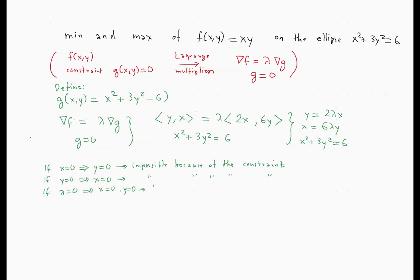So the bottom line is: x ≠ 0, y ≠ 0, and lambda ≠ 0. This is helpful because we can divide the first two equations by parts. When we do so, we get y/x = x/(3y), and cross-multiplying gives 3y² = x².